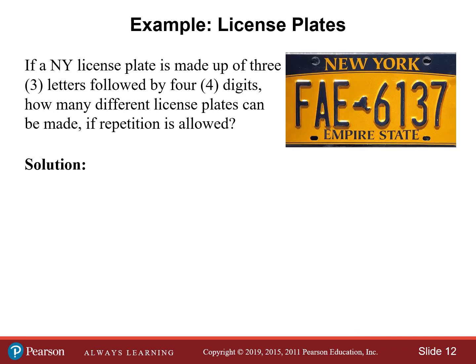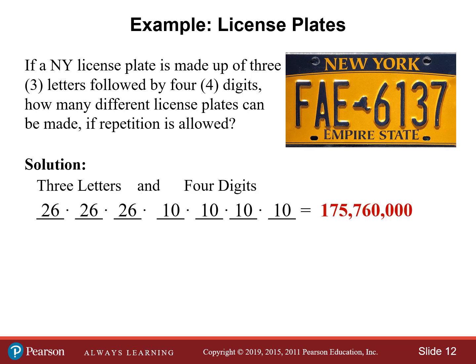Here's another example. Let's say in New York, license plates are made up of three letters followed by four digits. How many different license plates can be made if repetition is allowed? Since there are 26 letters in the alphabet and repetition is allowed, it's 26 times 26 times 26 for the letters. And by the way, the word 'and' simply means to multiply. So 26 times 26 times 26, times 10 times 10 times 10 times 10 for the four digits, gives a grand total of 175,760,000 different license plates.